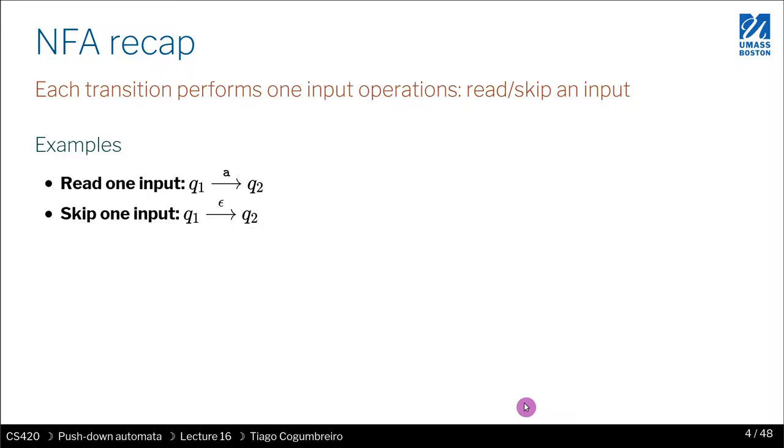So if you recall, an NFA has the following structure. You can either read an input or you can skip an input. You also have the notion of non-determinism, but essentially on each edge you can do either of two operations. You can consume an input or you can skip an input and just move to another state without consuming an input. So let's call the first one reading and the second one skipping. Basically, you have two operations that you can do per edge.